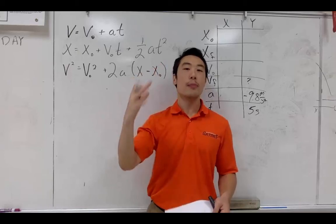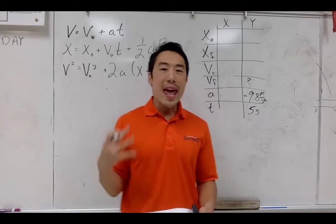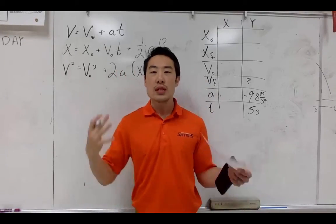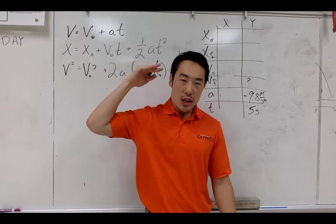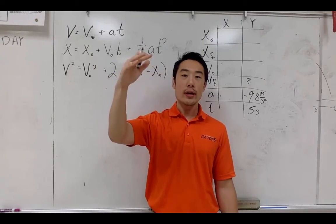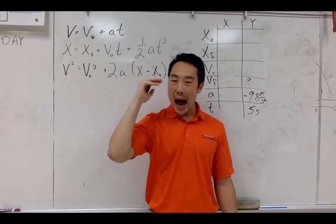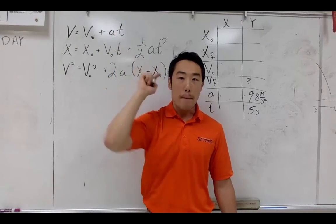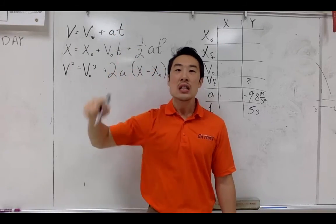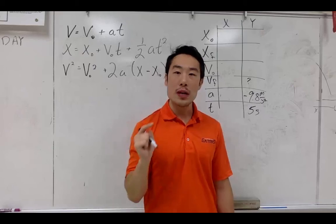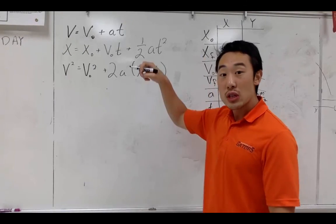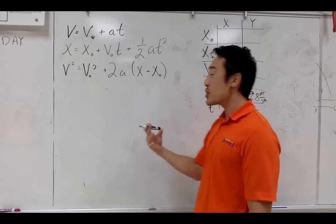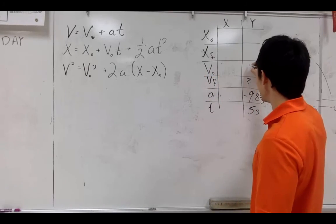Here's one of those things you have to memorize. When an object is dropped or released from its initial position, at the highest point — the peak or the maximum height — the velocity is zero meters per second. So when this object is first dropped, in the beginning, it has zero meters per second for its initial velocity.